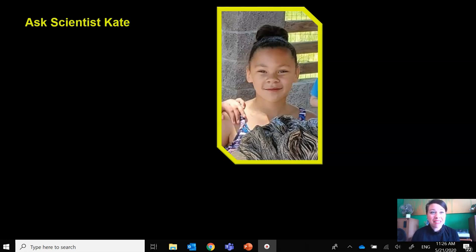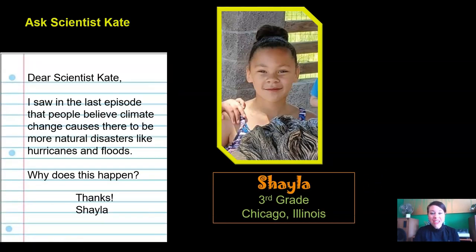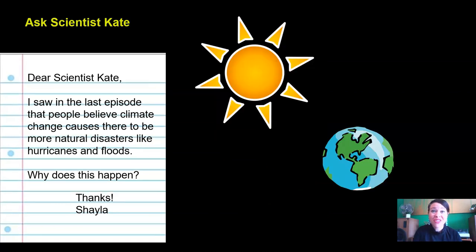In the meantime, we're going to do another episode of Ask Scientist Kate. Today's letter comes from Shayla, who's in third grade in Chicago, Illinois. Her letter says: Dear Scientist Kate, I saw in the last episode that people believe climate change causes there to be more natural disasters like hurricanes and floods. Why does this happen? Thanks, Shayla. Shayla, this is a great question and a really important one, so thanks for asking.